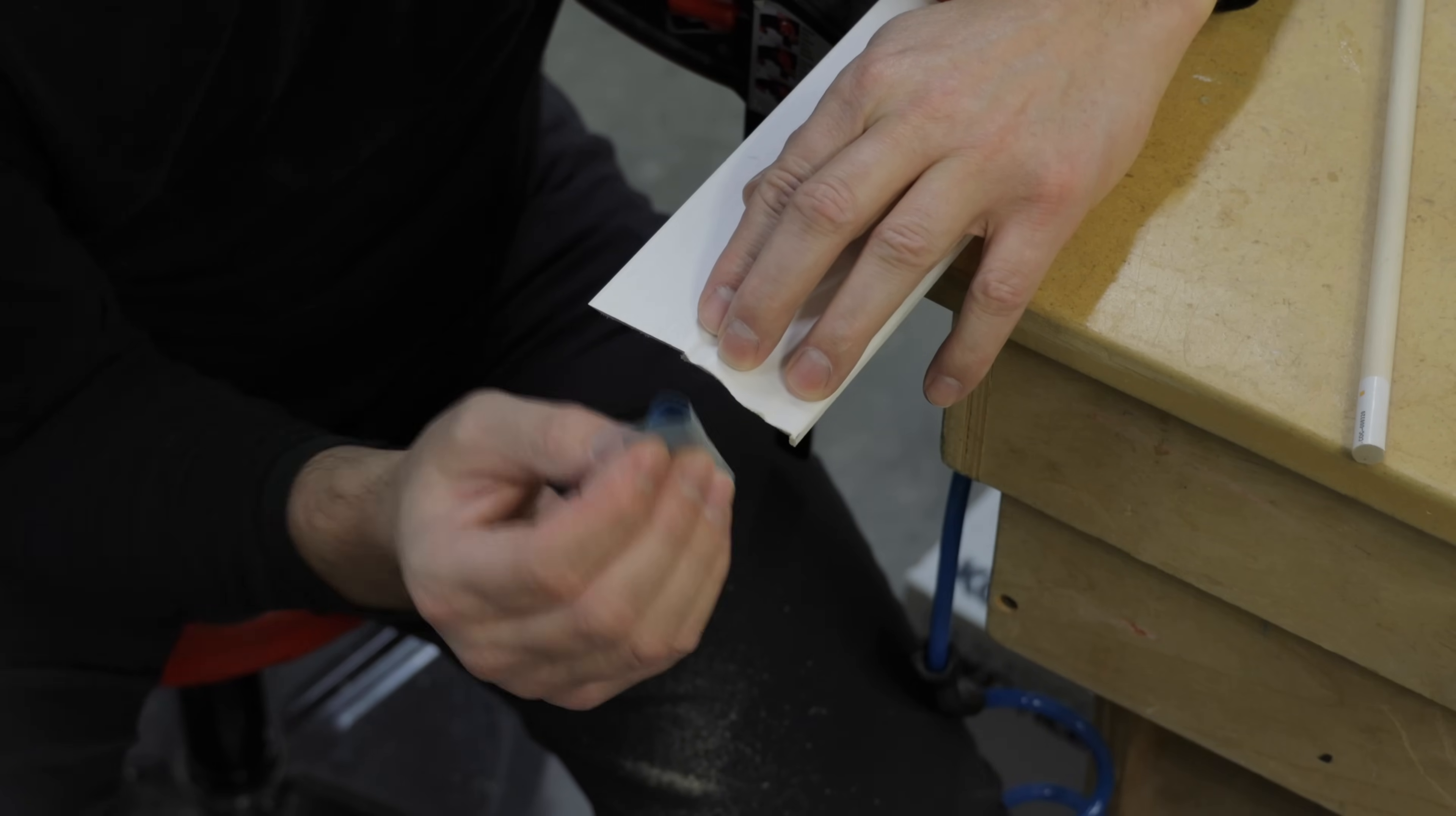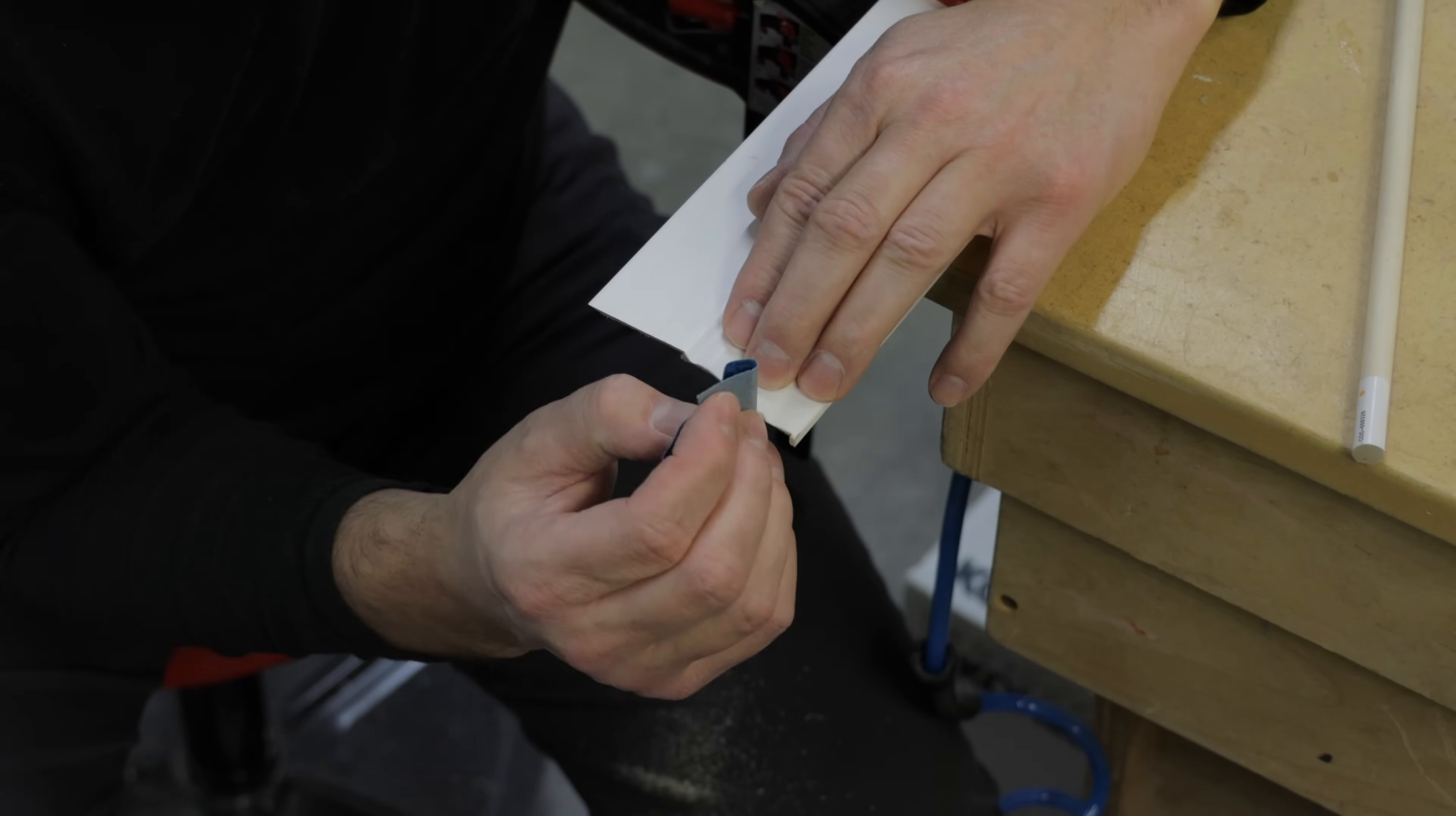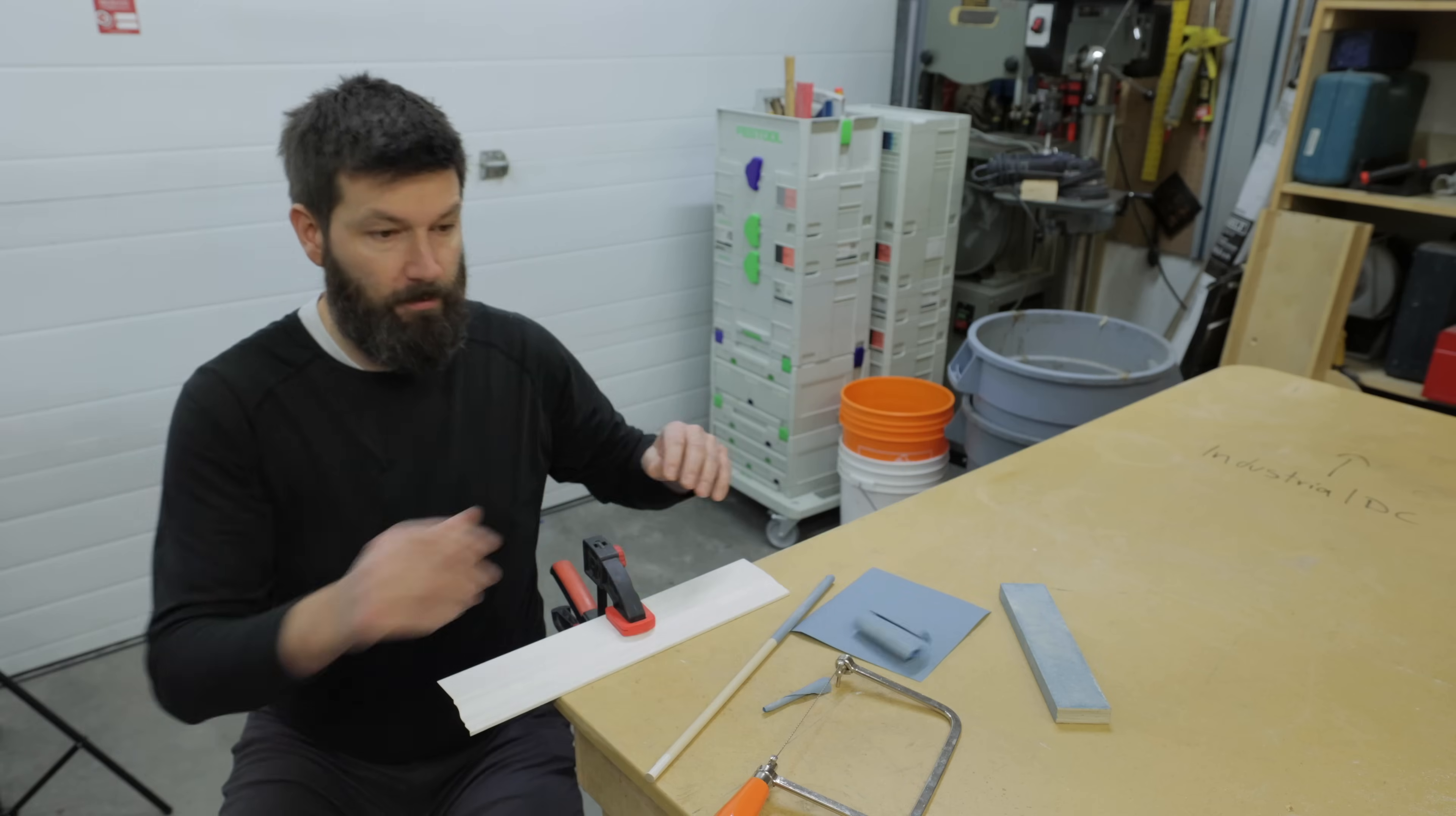You don't want to go straight up and down, but just flatten it out a bit. It's going to make it sand a little quicker. Let's check that with a scrap piece.